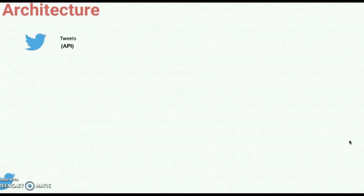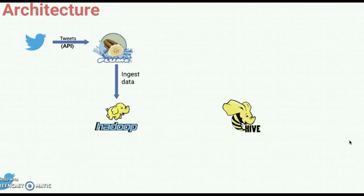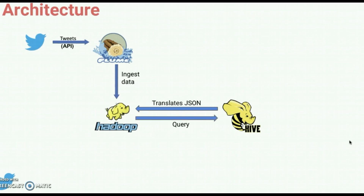Let's try to understand the architecture or flow of the project. Firstly, using the Twitter API, we are going to collect all the Twitter data and load it into Flume. Flume collects all the data in an unstructured format. Since Apache Flume receives all the data in unstructured format, Hadoop cannot process it, so it takes help of Apache Hive. Apache Hive processes this unstructured data and converts it back into a queryable structured format, and that is loaded into Hadoop. Hadoop then processes the data and produces final analyzed results, which are further explained in the coming slides.